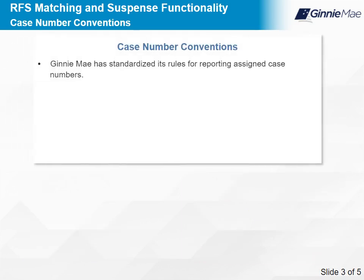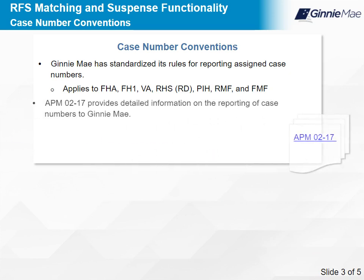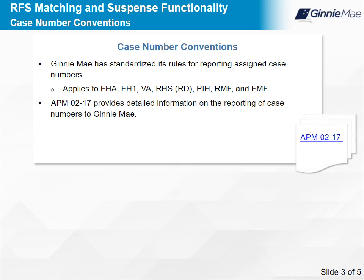Ginnie Mae has standardized its rules for reporting of assigned case numbers regarding its business applications. This applies to the following: FHA, FHA Title I (FH1), VA, RHS, RD, PIH, RMF, and FHA Multifamily (FMF). APM 2-17 New Standards for Reporting Loan Information to Ginnie Mae provides detailed information on the reporting of case numbers to Ginnie Mae.